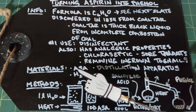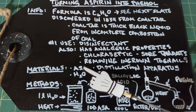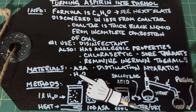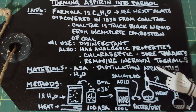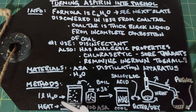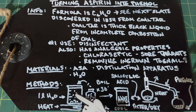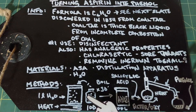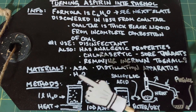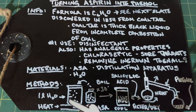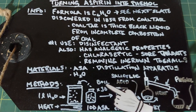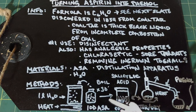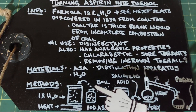For our materials we need ASA or aspirin — acetylsalicylic acid — some distilled water, and a distillation apparatus. For our methods, we're going to take a one-liter beaker, fill it with water, boil it, and then put 100 aspirins in and continue to boil for at least 30 minutes. The 100 aspirins will dissolve completely while boiling this long.